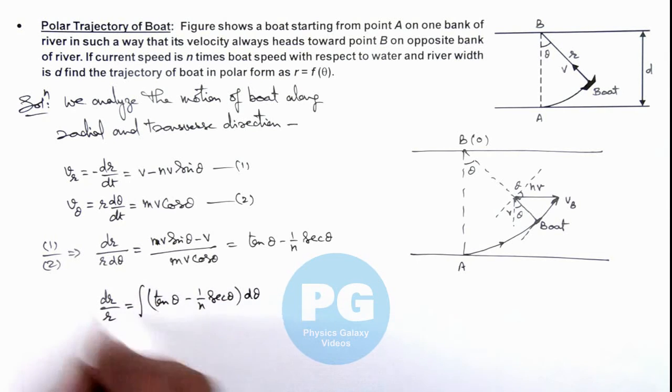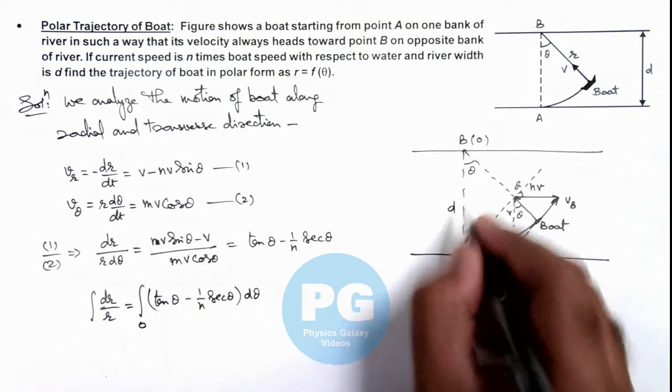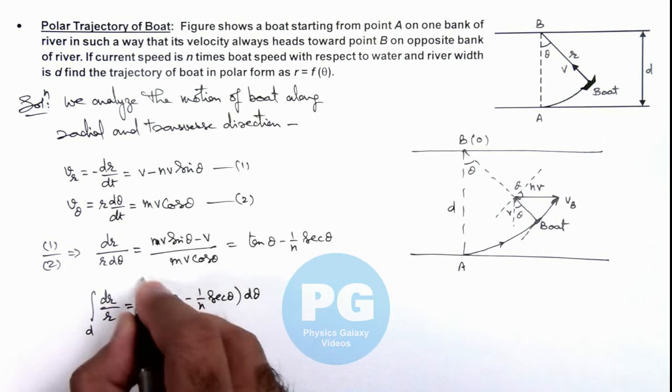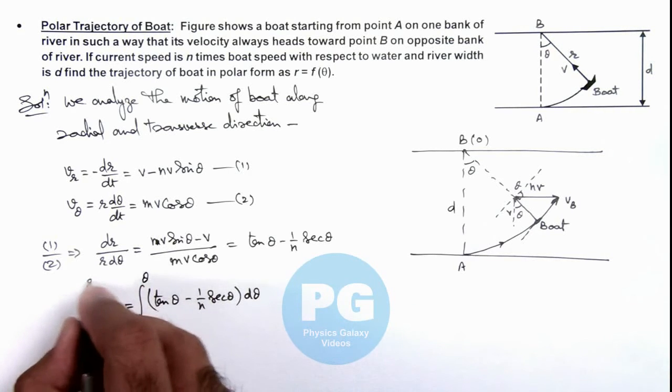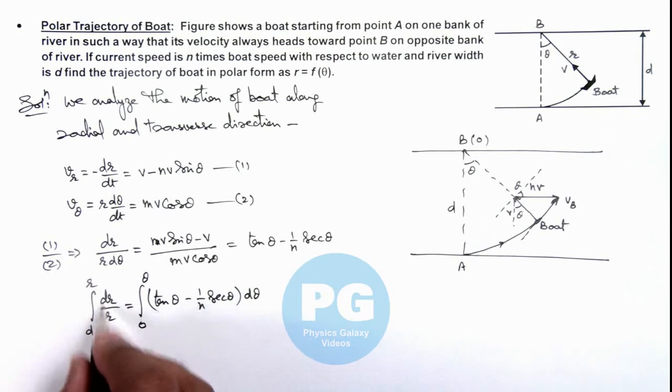If we integrate this expression, we'll get r as a function of theta and we can see when theta was zero, the value of r was d which was the width of this river, and at an angle theta the position of r is r. So integrating left hand side will result as ln of r and we apply limits from d to r.